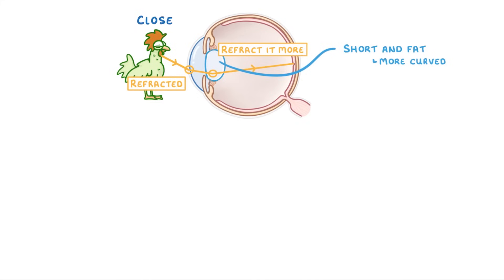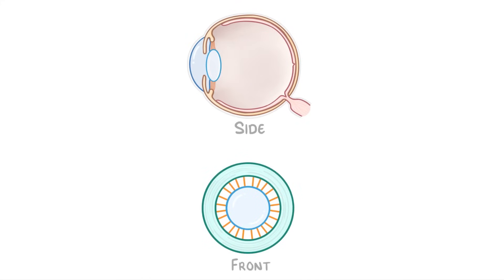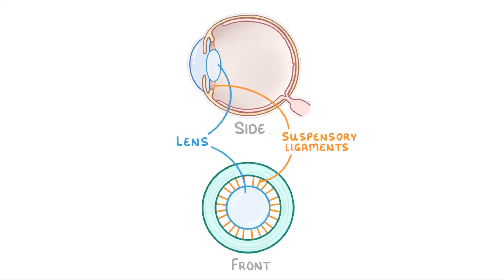To show exactly how this happens, let's take a look at the eye from the front and the side at the same time, and explain what all the parts are. The blue circle in the middle is the lens. Then the orange bits around it are the suspensory ligaments, which attach the lens to the ciliary muscle, which is a muscle that stretches all the way around like a ring. Just be aware that these structures are completely different to the muscles of the iris we looked at in the previous video.